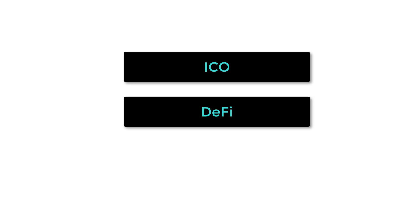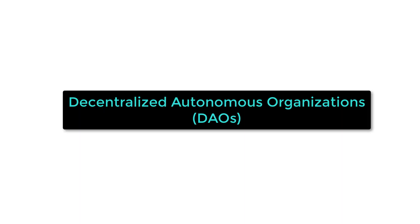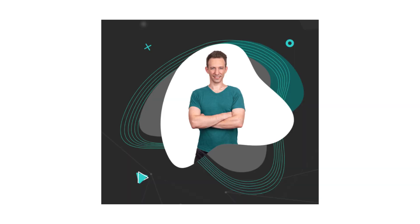ICO, DeFi, NFT — there is always a new bubble in crypto, but there is one bubble that we haven't seen yet. And when it happens, it's going to change the world. I'm talking about decentralized autonomous organizations.